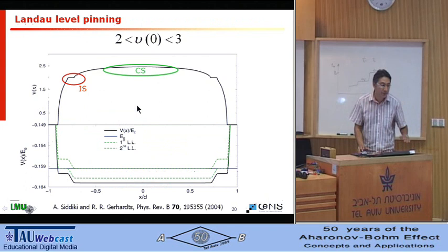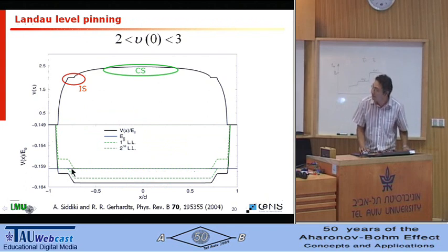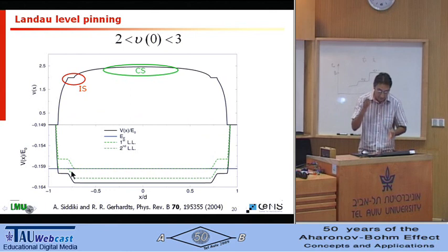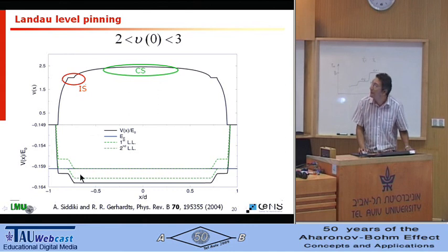But when you reduce magnetic field, you start to occupy this, you start to have some gaps between two Landau levels at certain positions. There you have the incompressible strips where the density doesn't change, but the potential changes.